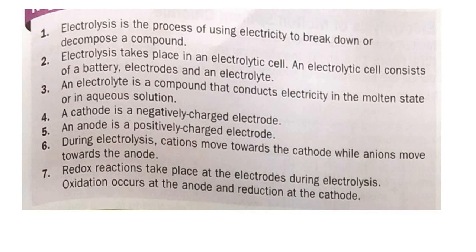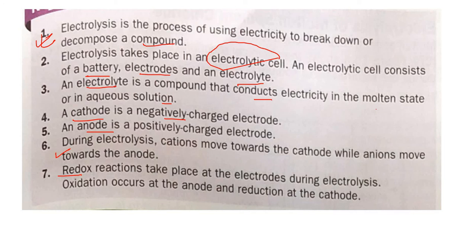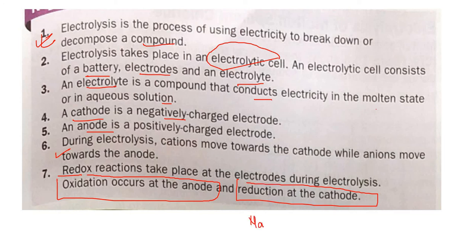To summarize: electrolysis is the process of using electricity to break down or decompose a compound. It takes place in an electrolytic cell with three components — battery, electrodes, and electrolyte. Electrolytes conduct electricity in molten or aqueous state. The cathode is the negatively charged electrode where cations discharge (reduction). The anode is the positively charged electrode where anions discharge (oxidation). Together, this constitutes a redox reaction.